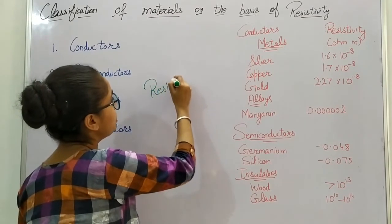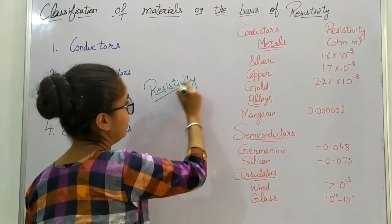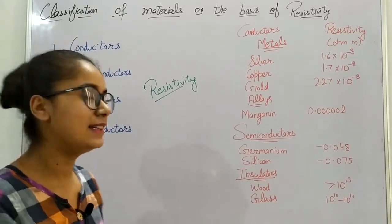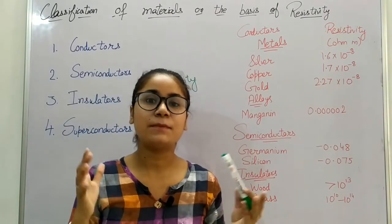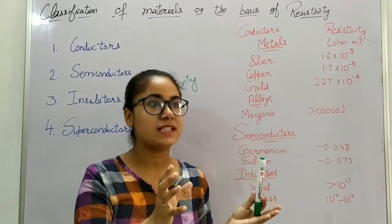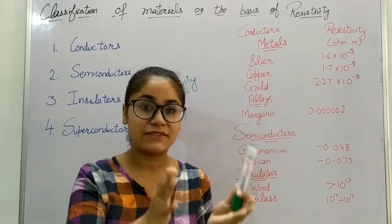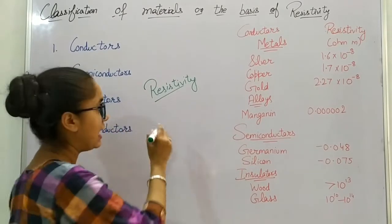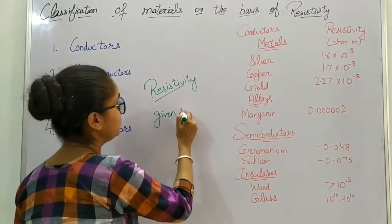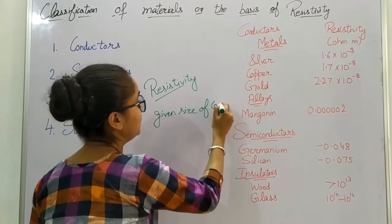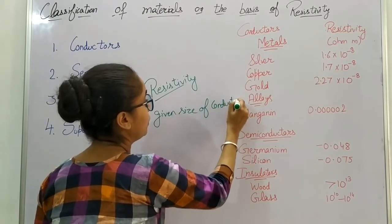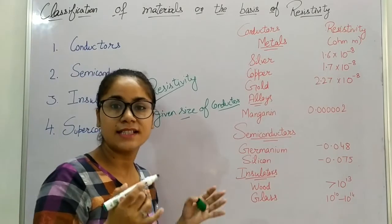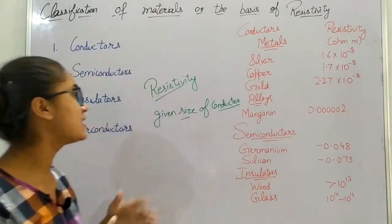The question arises: what is resistivity? Resistivity is a measure of resistance of a special material of a given size to electrical conduction. That means we should have a given size of conductor, measure the resistance of that given size, and that is called the resistivity.